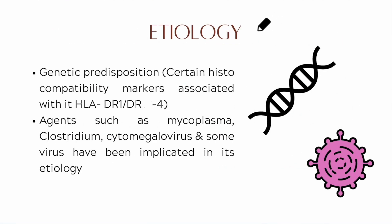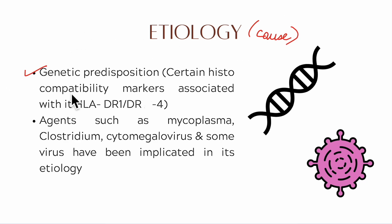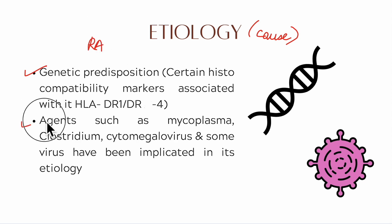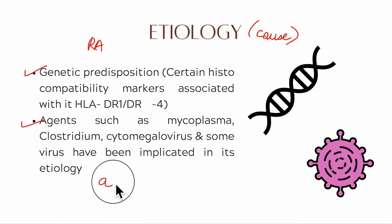Next, let us understand the etiology — that is, the cause of rheumatoid arthritis. First is genetic predisposition: certain people have genetic histocompatibility markers like HLA-DR1 or HLA-DR4 that make them more likely to be affected. Secondly, agents such as mycoplasma, clostridium, and viruses like cytomegalovirus have also been implicated. Other factors include age, smoking, and obesity.